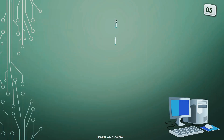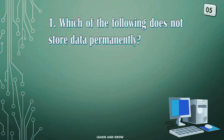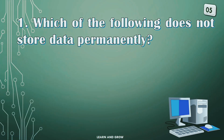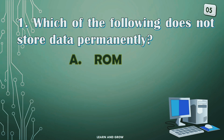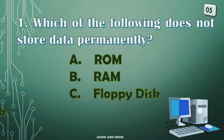Which of the following does not store data permanently? Option A: ROM, Option B: RAM, Option C: Floppy Disk, or Option D: Hard Disk.